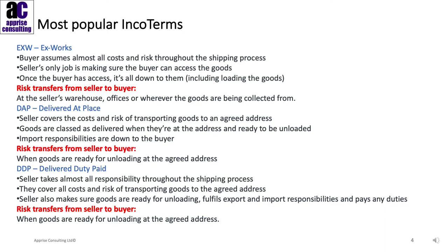The second one is Delivered at Place. Here the seller covers the costs and risks of transporting the goods to an agreed address, and this agreed address has to be accurate. Goods are classed as delivered when they're at the address and ready to be unloaded. However, import responsibilities are down to the buyer. Risk transfers from seller to buyer when the goods are ready for unloading at the agreed address.